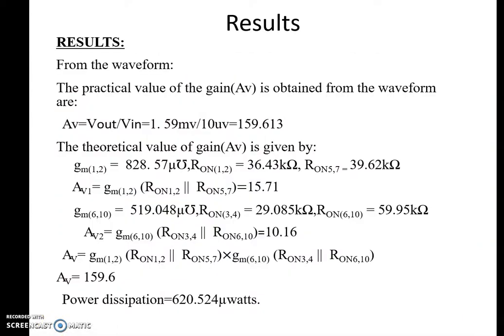Now we will discuss the results. From the waveform we get the practical gain: Av = Vout / Vin. Vout is 1.59 millivolts and Vin is 10 microvolts, giving a total practical gain of 159.613.